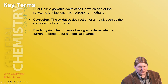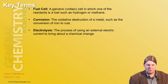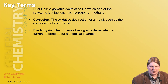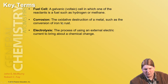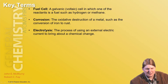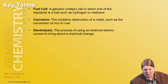Fuel cells are galvanic cells in which one of the reactants is a fuel or something that could be combusted, but we're using it as a solely electrical reaction. Corrosion is oxidative destruction of a metal — usually a metal reacts slowly with oxygen gas to form rust. Electrolysis is the process of using an external electric current to bring about a chemical change.